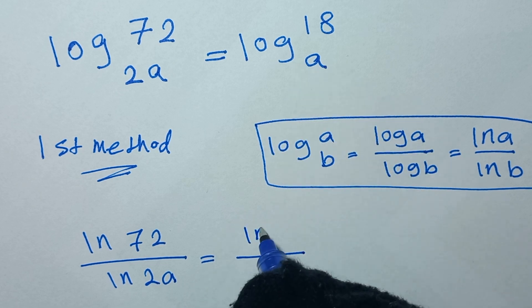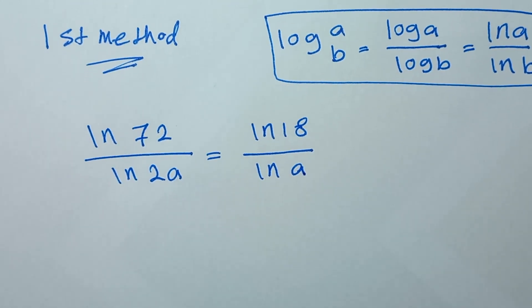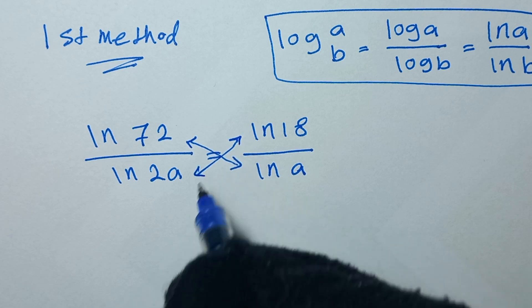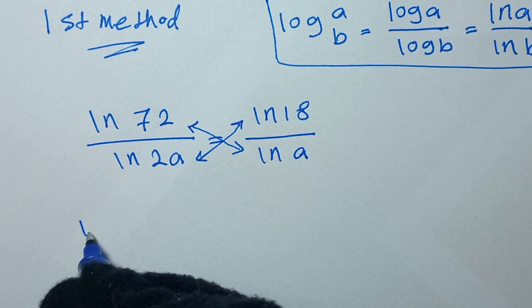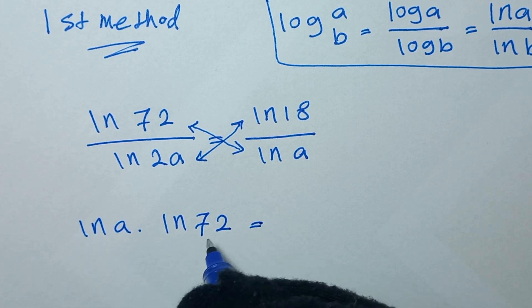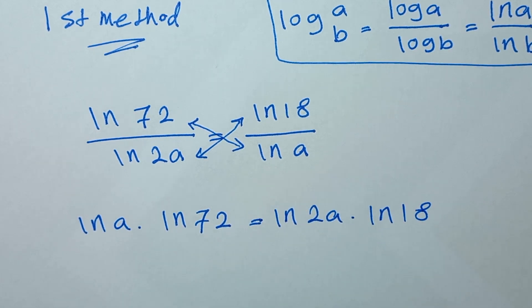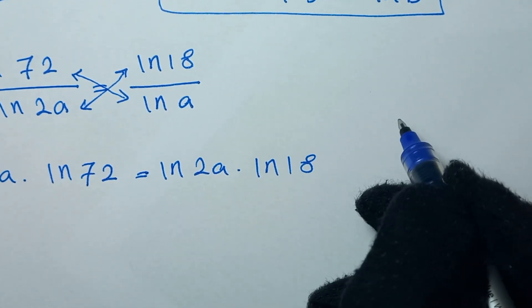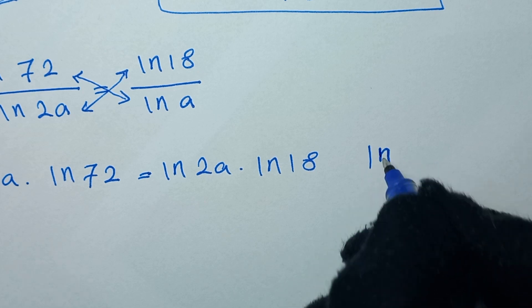ln of 18 over ln of a. In the next step we use cross multiplication — this times this and this times this — and it will be ln of a times ln of 72 is equal to ln of 2a times ln of 18.